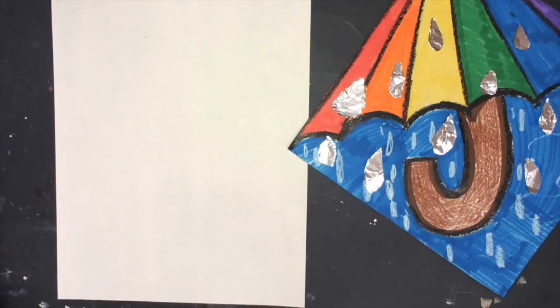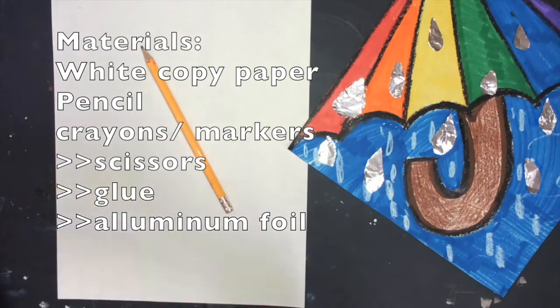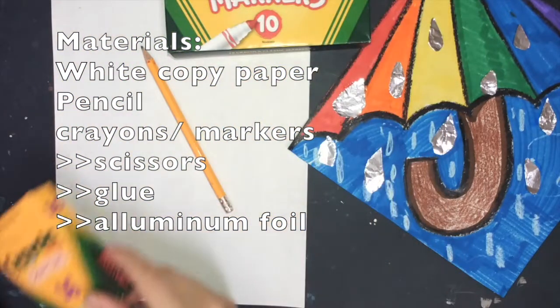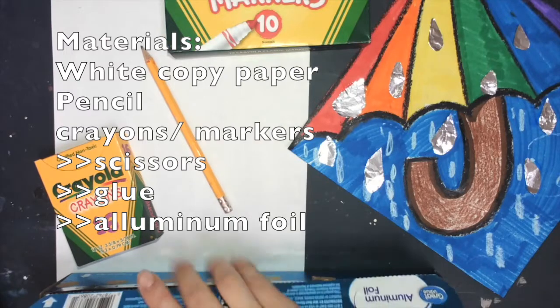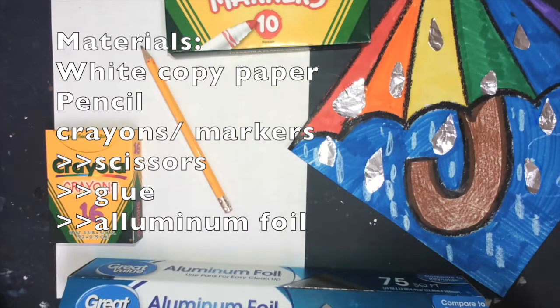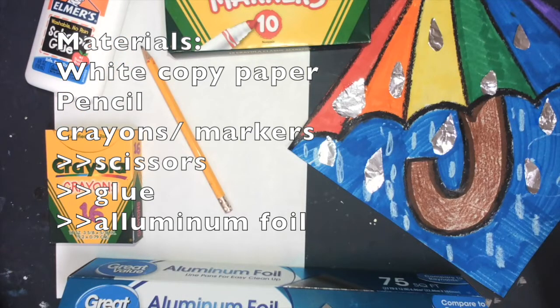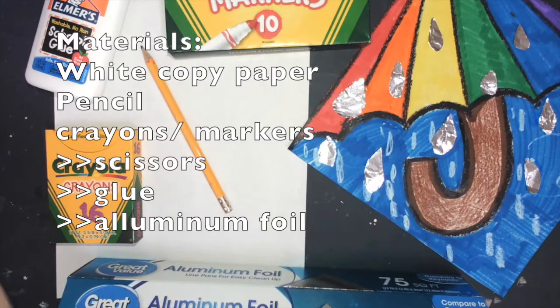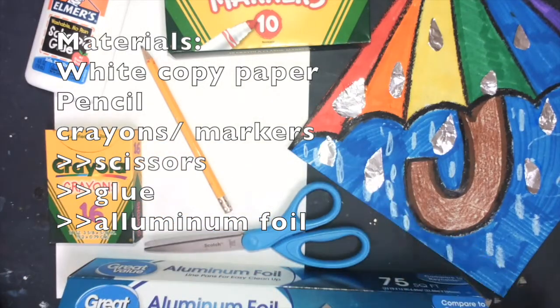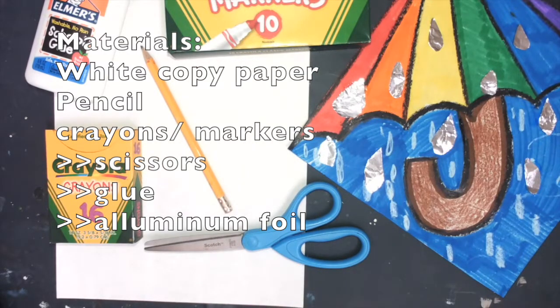The following materials you will need for this lesson are white paper, a pencil, crayons or markers, and optional scissors, glue, and aluminum foil. You will really only need crayons and a white piece of paper for this lesson. I would also suggest having some markers for our optional crayon resist for our raindrops.